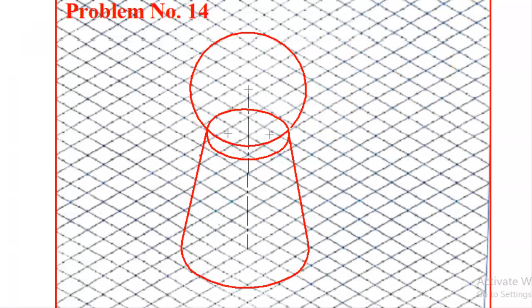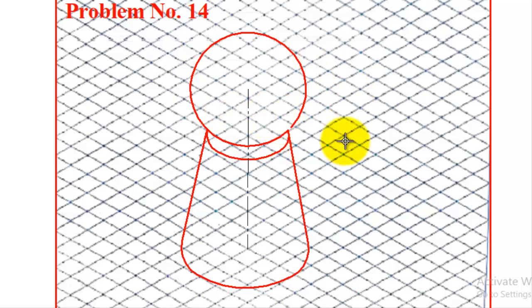This completes the drawing. Erase the portion of the frustum that falls inside the sphere, and delete the center lines. The problem is now complete.